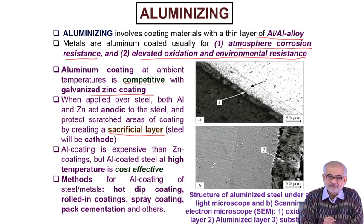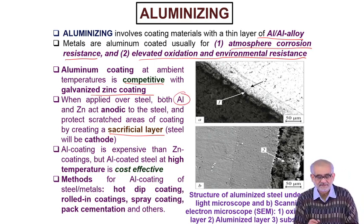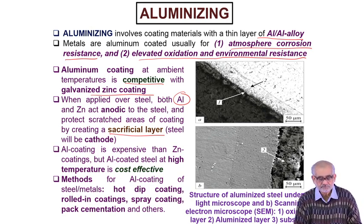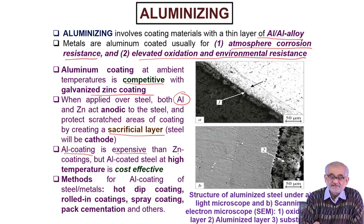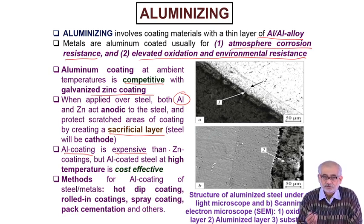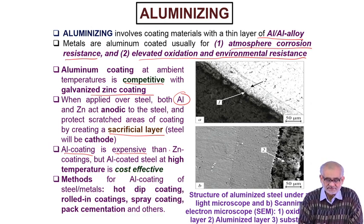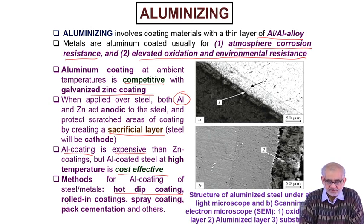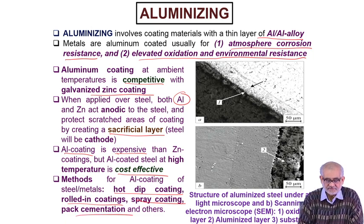There is a large similarity because both zinc and aluminium provide a sacrificial layer. The base substrate remains cathodic, but the top layer of aluminium will react and form an oxide layer, sacrificing itself to protect the underlying substrate which is steel or some other alloy. Aluminium coating is more expensive than zinc coating, but at high temperature you do not have a choice because zinc is not an effective oxidation protection element at high temperature — it has a tendency not only for reaction but also for reaching the volatile state. For high temperature, aluminium coating is certainly cost effective. The aluminium coating on steel or other metallic alloys can be obtained by hot dip coating, roll-in coating, spray coating, or pack cementation, a solid state process.